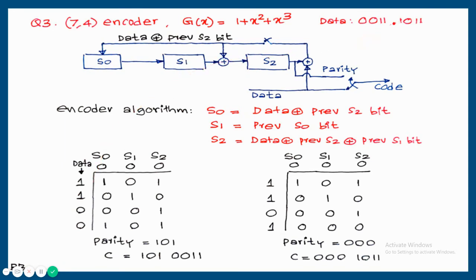Since the rightmost bit is transmitted first, data 0011 is entered as 1, 1, 0, 0 in the table. S0 = data + previous S2 = 1 + 0 = 1. S1 = previous S0 = 0. S2 = data + previous S2 + previous S1 = 1 + 0 + 0 = 1. After four data bits, the parity bits in the fourth row are 1, 0, 1.